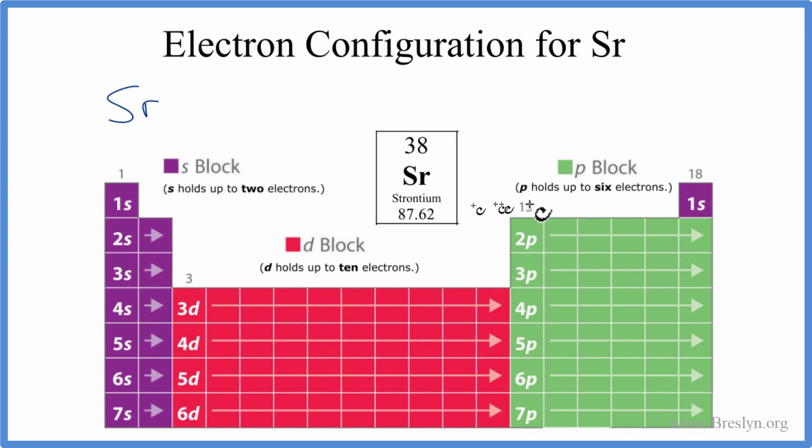We'll start by going to the 1s. S can hold up to 2 electrons. We have 1s¹, 1s². That's full. Then we go to 2s, 2s¹, 2s². We've used 4 electrons. We have 38. We have a little ways to go.